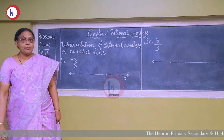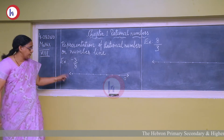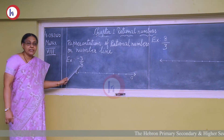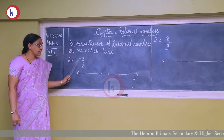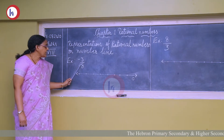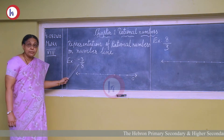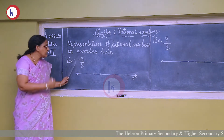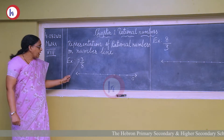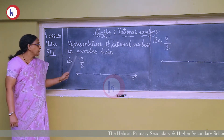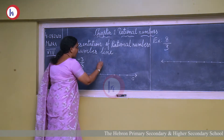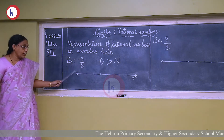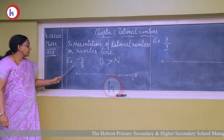For example, we have taken minus 3 upon 8. From this you can understand that this rational number is a negative number. When we want to represent negative numbers on a number line, you should know that negative numbers always come on the left side of zero. Now looking at the numerator and denominator, you can see that the denominator is greater than the numerator.